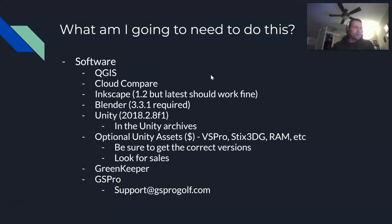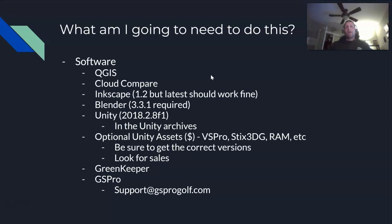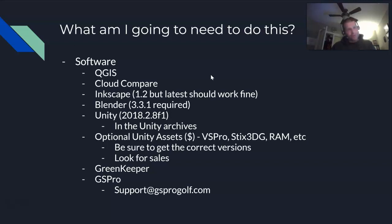Unity is probably the main program where you'll be spending the majority of your time. It's a good name because Unity unifies and brings all this stuff together — it's ultimately what makes the game file we use in GS Pro. We are required to use a very specific version: Unity 2018.2.8f1. Do not install anything else. Unity will try to get you to install newer versions — do not do that. Use that one. You'll have to find it in the Unity archives. Unity is also free.